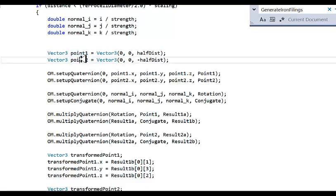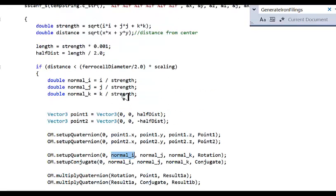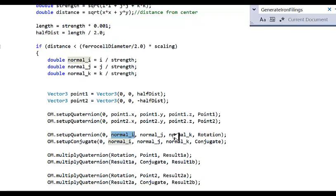So I take these two points, which I place in a vertical orientation. And then I transform them through the quaternion using the normalized vector, which I normalize right here. So I take the I, J, K divide each by the strength to get the normalized vector. And that is what I use to orient my cylinder.